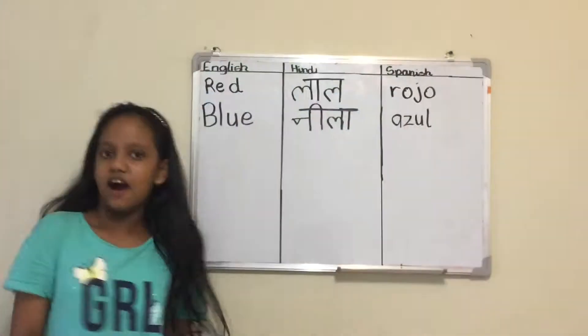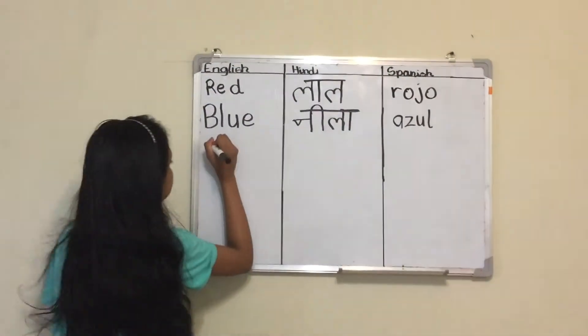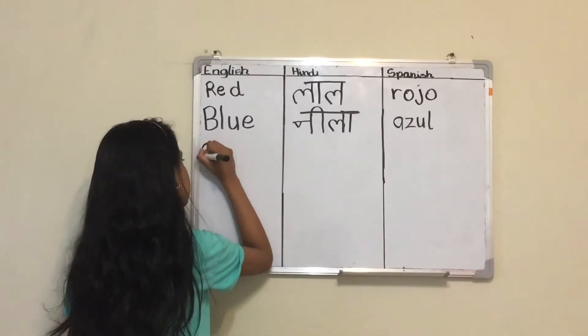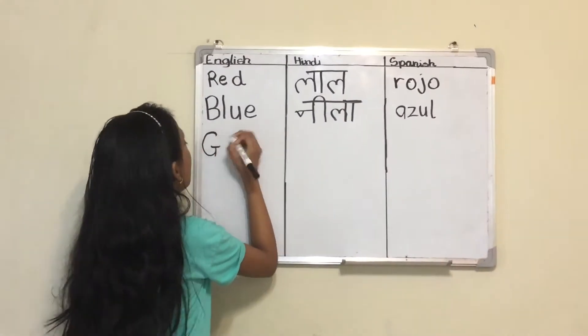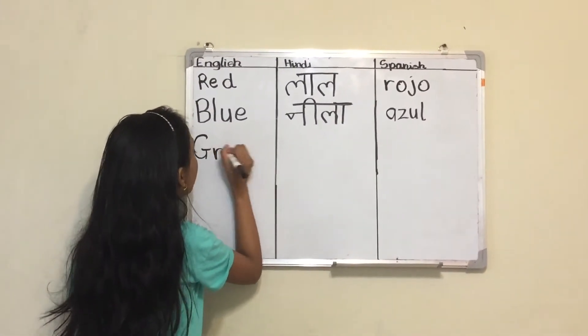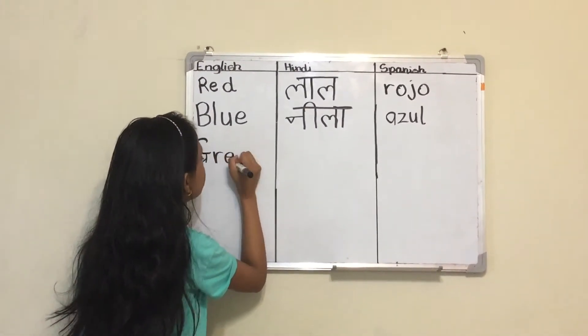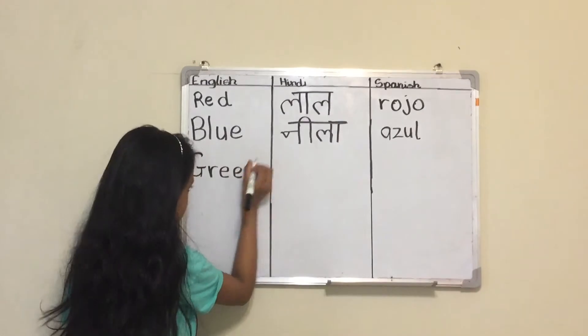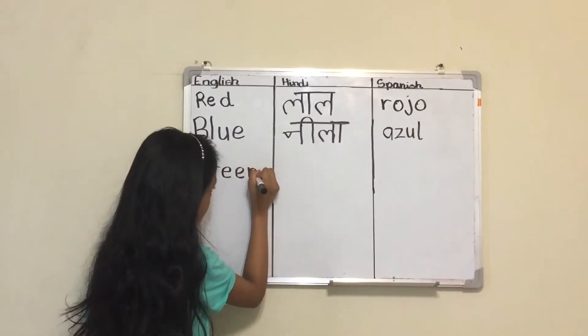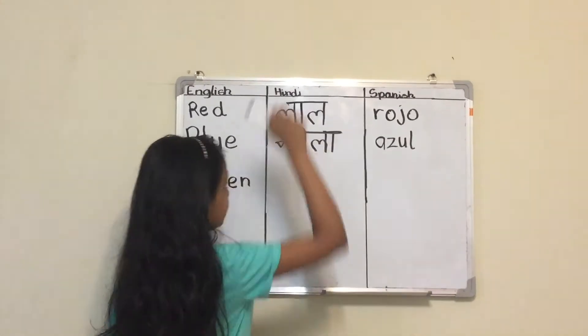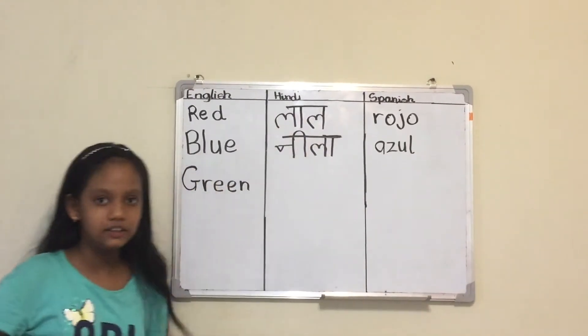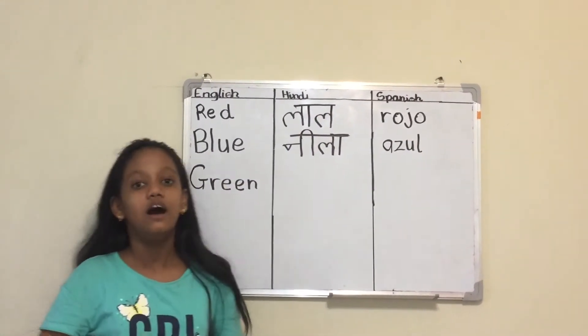Green now. Spelling of Green is G, R, two times E, and N. And in Hindi, Green means Hara.